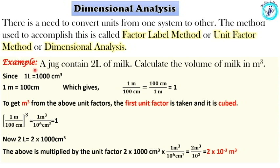Let's look at a dimensional analysis example. A jug contains 2 liters of milk. Calculate the volume of milk in meter cube. 2 liters — we need to convert to meter cube. 1 liter is 1000 centimeter cube. 1 meter is equal to 100 centimeter. If 1 meter is equal to 100 centimeter, we will divide: that is 1 meter by 100 centimeter, which equals 100 centimeter by 1 meter, which is equal to 1.